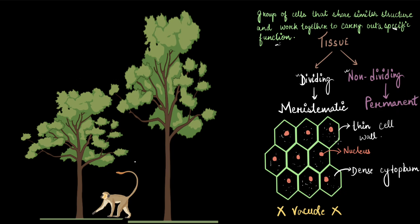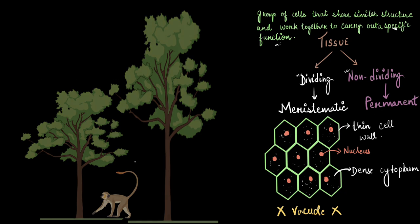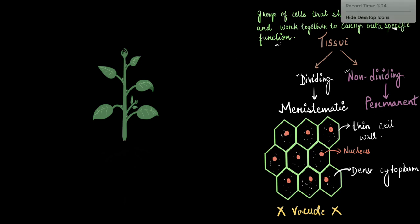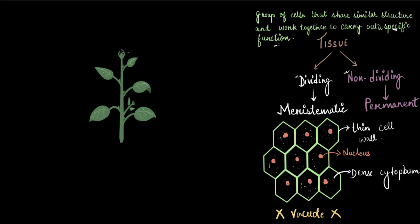Given their incredible property to divide, these tissues are found in the growing regions of the plant. Unlike animals whose growth is pretty uniform, growth in plants is limited only to certain areas. I would like you to pause the video and think of those areas where growth takes place in a plant. The first answer would obviously be the shoot tip.